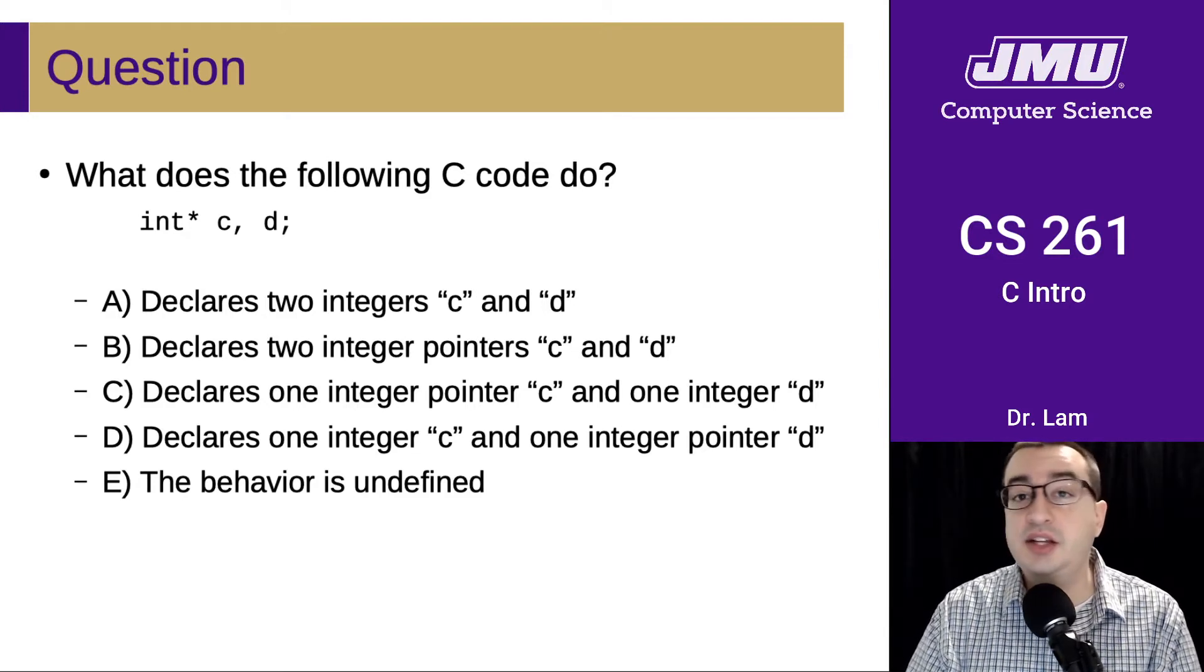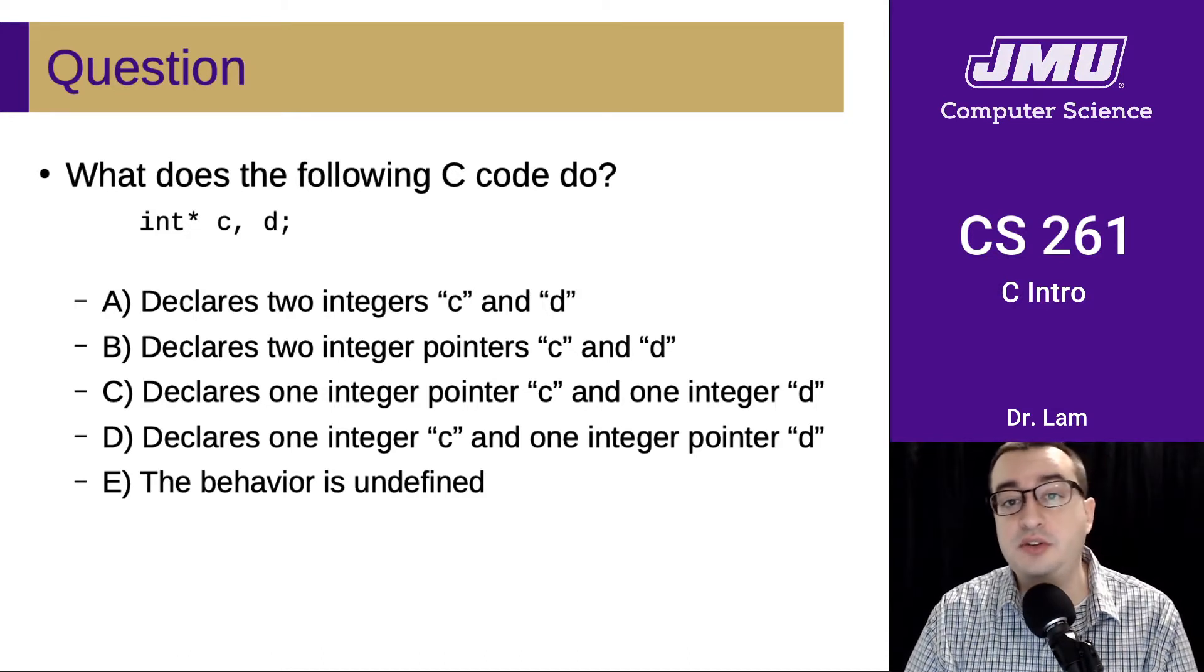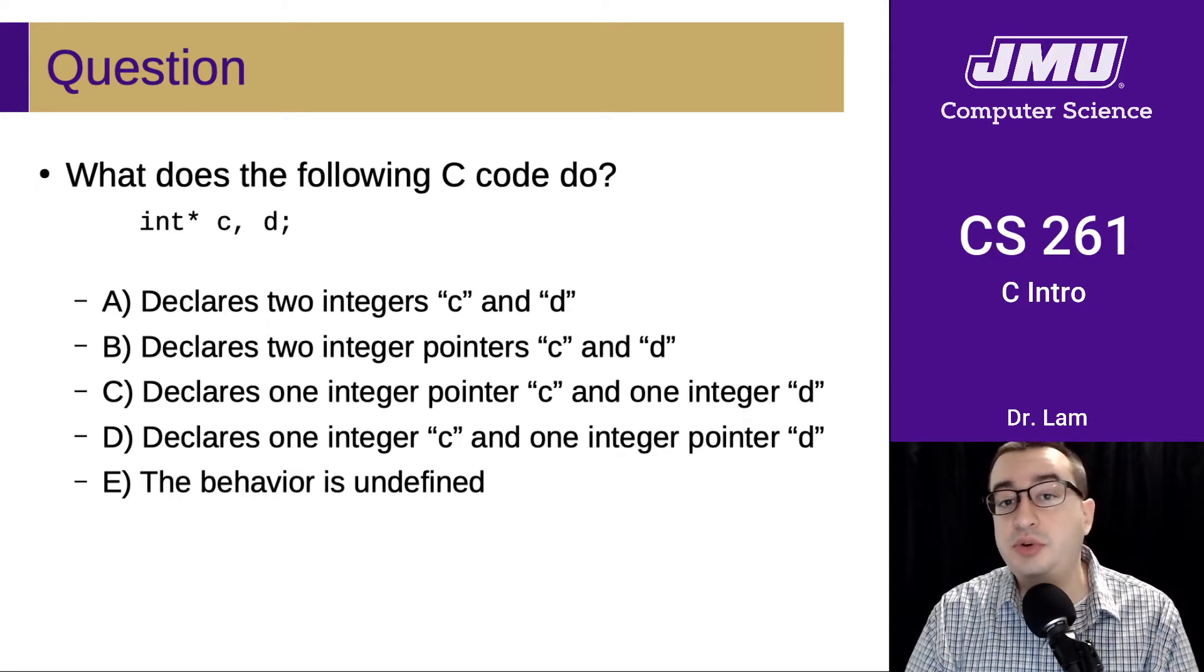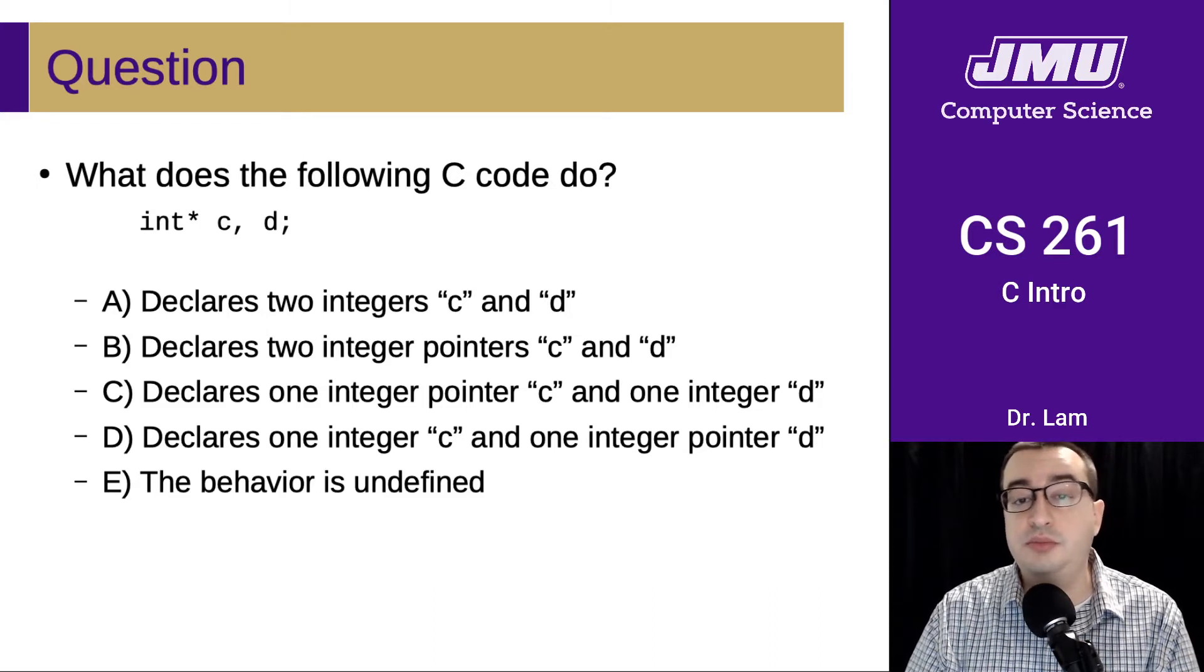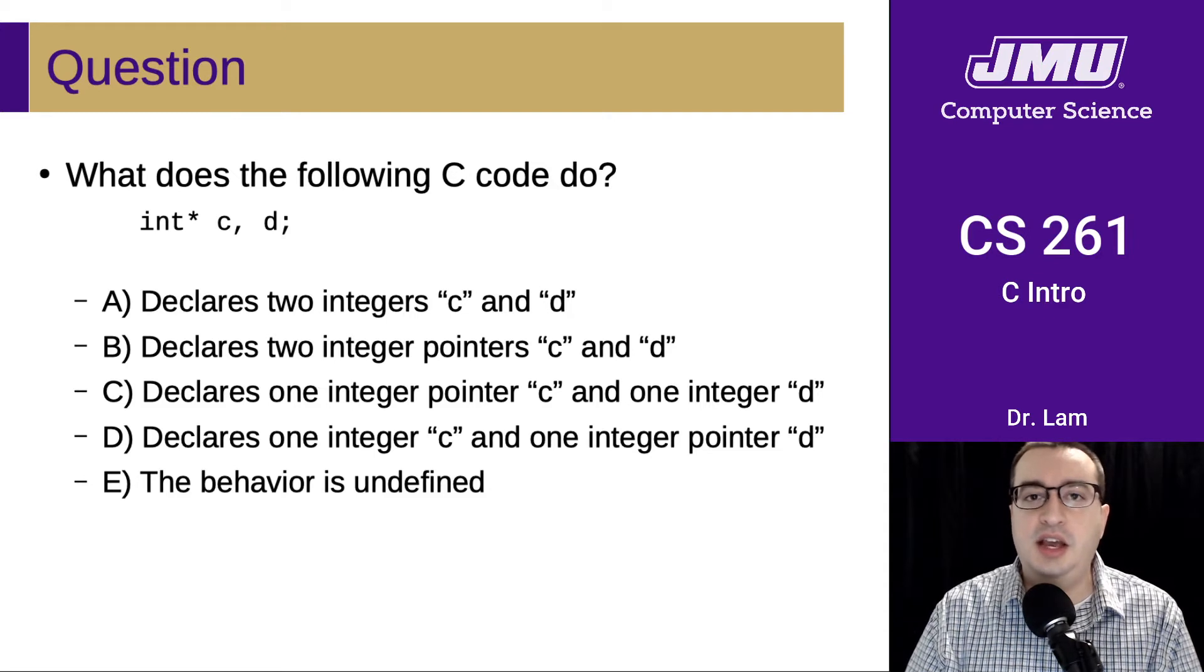So is this going to A, declare two integers C and D? Is it going to B, declare two integer pointers C and D? Is it going to C, declare one integer pointer C and one integer D? Or D, declare one integer C, one integer pointer D? Or is this behavior going to be undefined? So take a second and think about what your answer would be to this question.